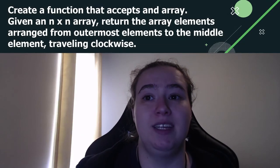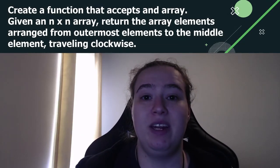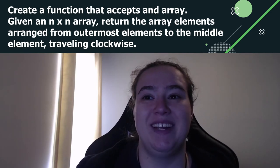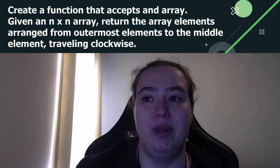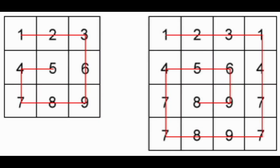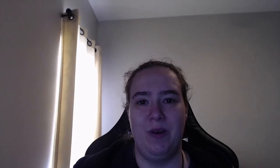Today, we're gonna be writing a function that accepts an array and, given an n by n array, returns the array elements arranged from the outermost element to the middle element traveling clockwise. I'm gonna throw up an image to make that a little easier, but basically it's like a snail where it goes from the top to the right, to the bottom, up, and then over, and so on until it doesn't have any more numbers to go through.